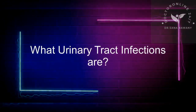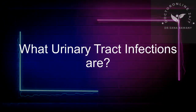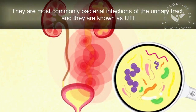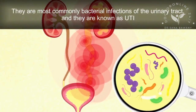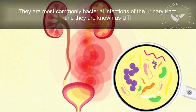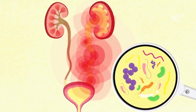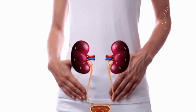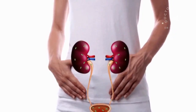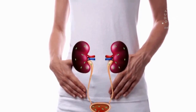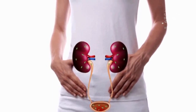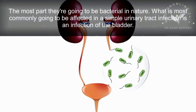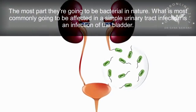Urinary tract infections are most commonly bacterial infections of the urinary tract, and they are known as UTIs. We can also see some fungal infections causing urinary tract infections, but for the most part they are going to be bacterial in nature.